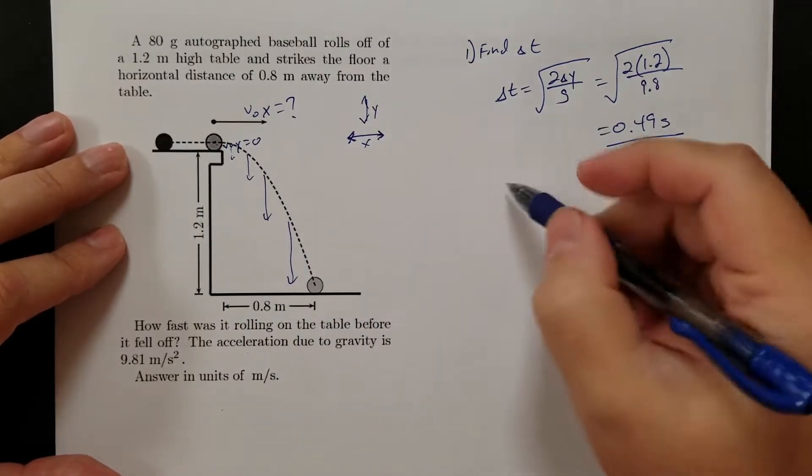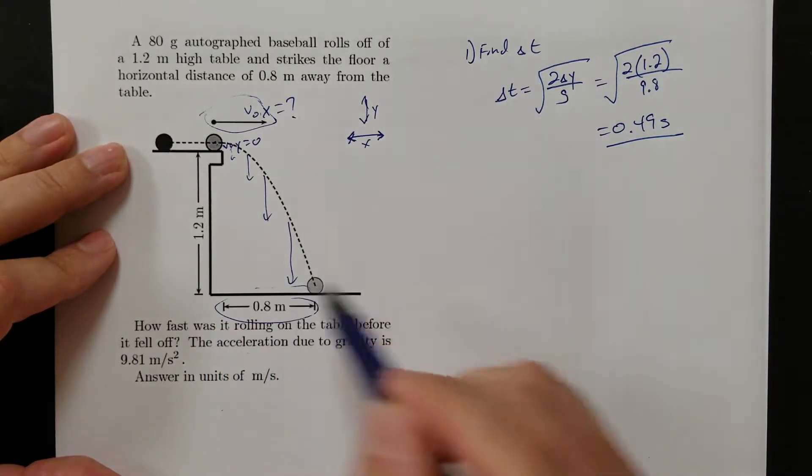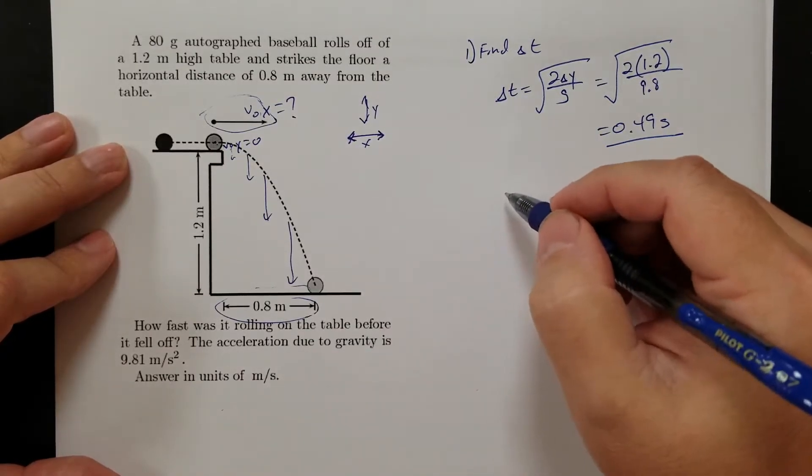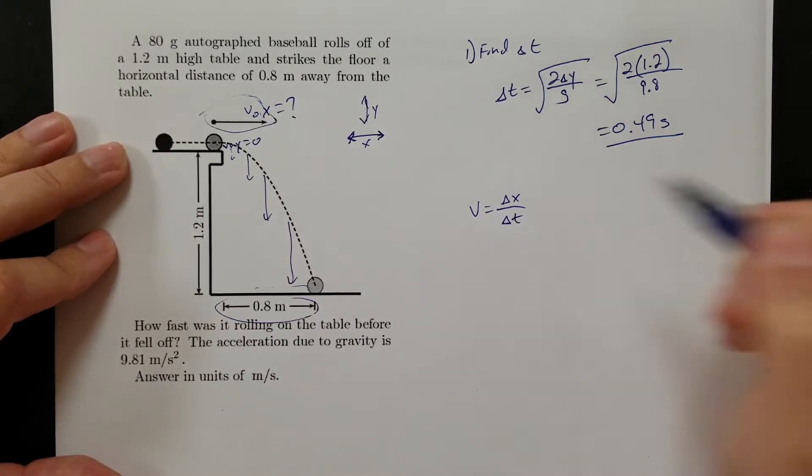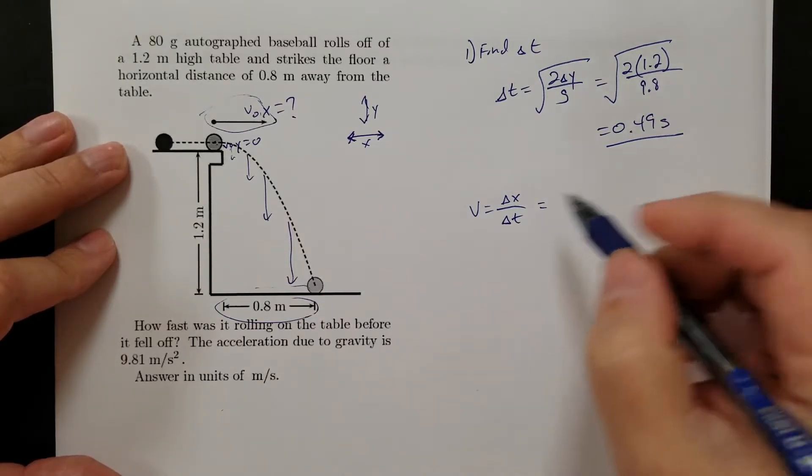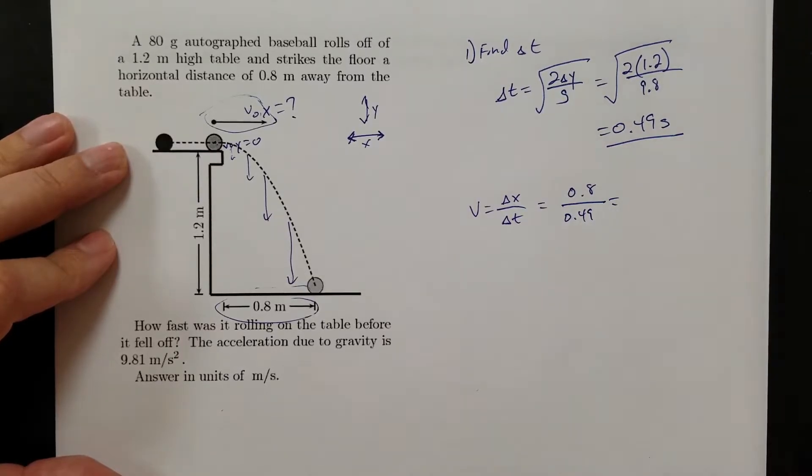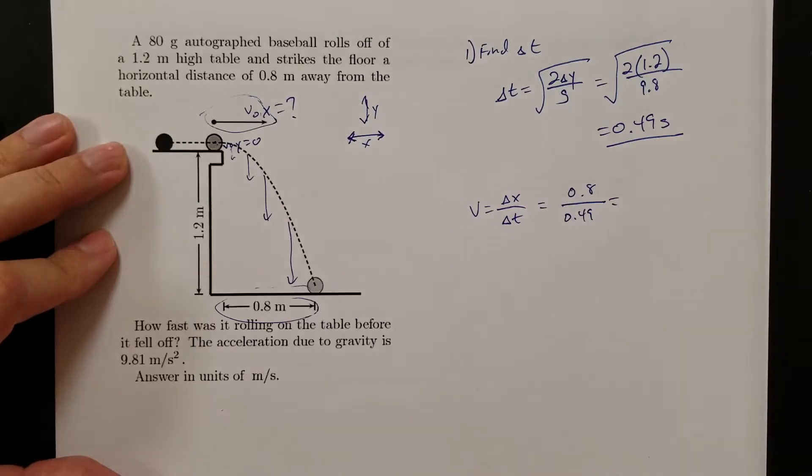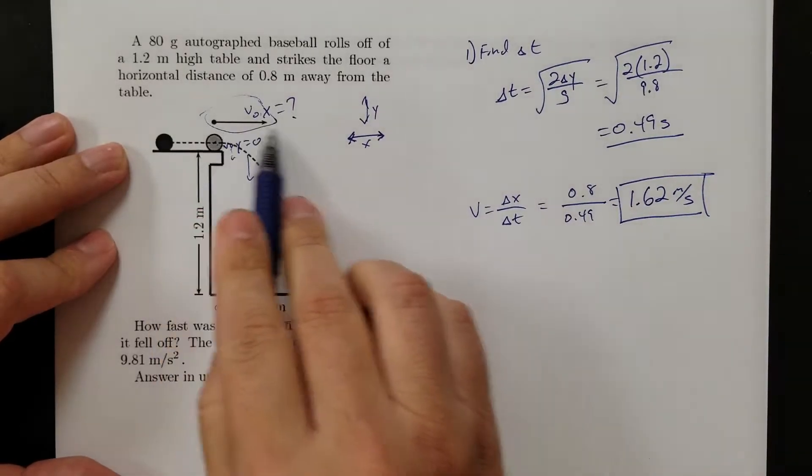All right, so now that I know the time it takes to fall, I can go figuring out this velocity. So here's an x velocity, here's an x displacement. And in the x direction, there's no acceleration. So my only real equation in the x direction is velocity is horizontal displacement over time. So delta x is 0.8, my time is 0.49. So if I do 0.8 divided by my answer from before, I get 1.62 meters per second. That's the velocity that this thing took off from the table with.